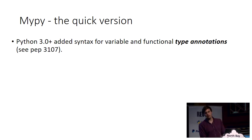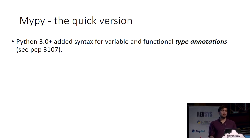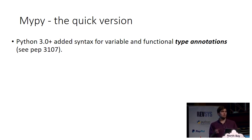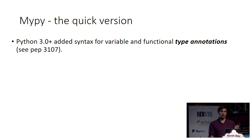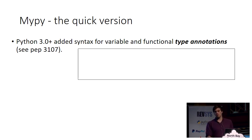In Python 3.0, syntax was added for variable and functional type annotations. Has anyone used them? Less than I thought. Type annotations can be pretty good — they help build the flow of what your application is supposed to do. If you've got big functions, it helps readability a little bit for other engineers that work on the same project.